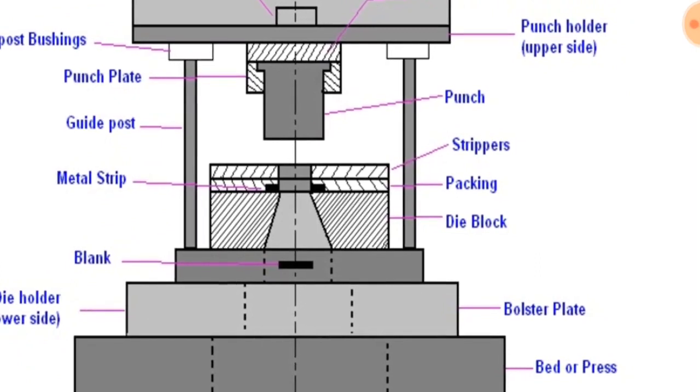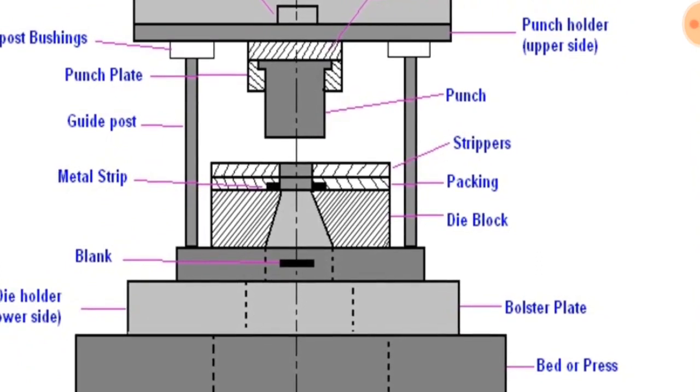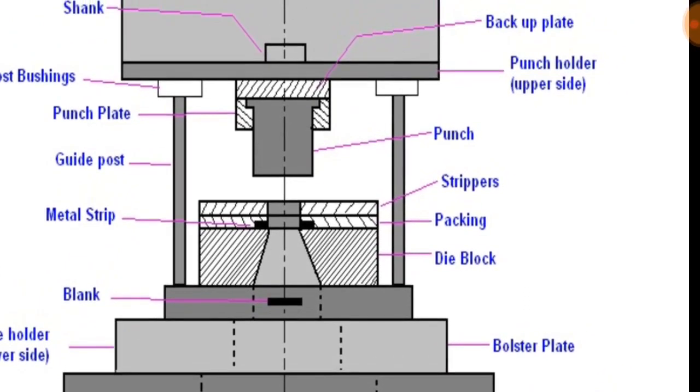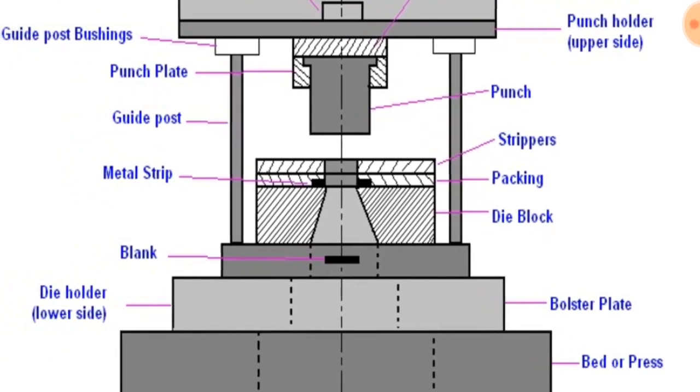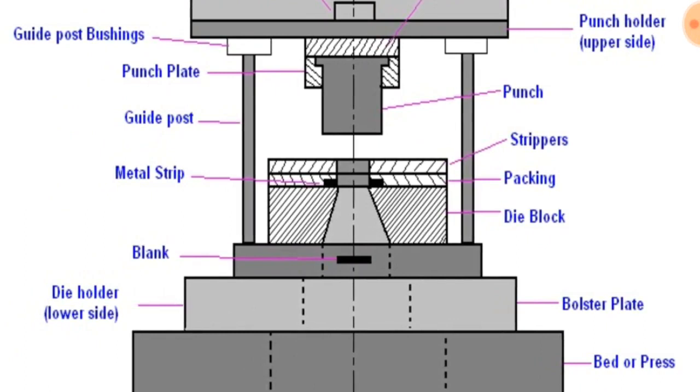Stroke: the stroke of the press is the distance of the ram movement from its up position to its down position. Die block: it is a metal block or a plate which contains die cavity.